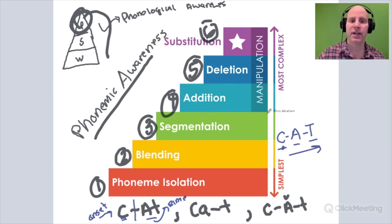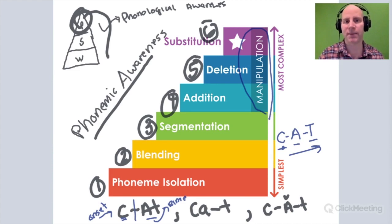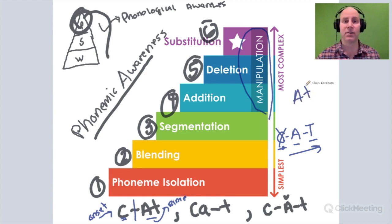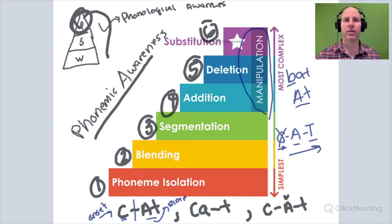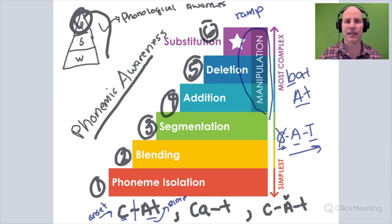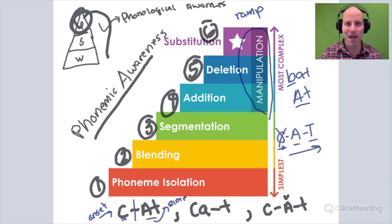Now let's go to the manipulation piece. Anything involving phoneme manipulation is always advanced phonemic awareness. These are activities that really test the student's ability to work with individual sounds in a word and change them to form other words. With deleting — if we deleted the 'c' in 'cat' we get 'at.' Or substituting — we could take the 'k' sound and change it to a 'b' to form 'bat.' Or adding — we could take the word 'ram' and add a 'p' to get 'ramp.' These are all different scenarios involving manipulating phonemes within a word.